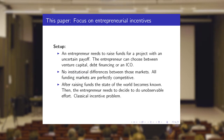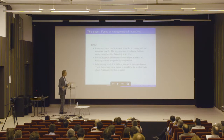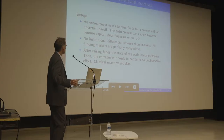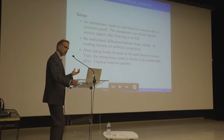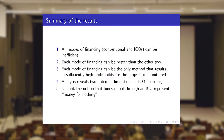So what are we going to do? We look at a situation where an entrepreneur needs to raise funds for a project with an uncertain payoff. The entrepreneur can choose between three forms of financing: venture capital, equity/debt financing, or an ICO. We do this in a world with no institutional differences — we want to focus purely on the differences in economic incentives.